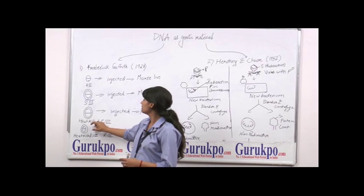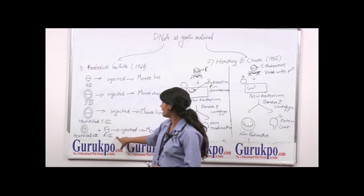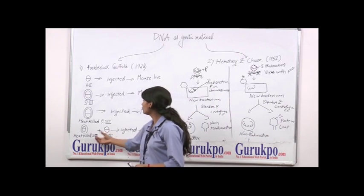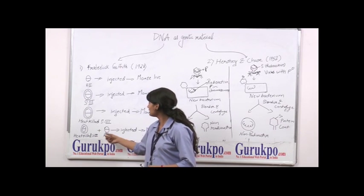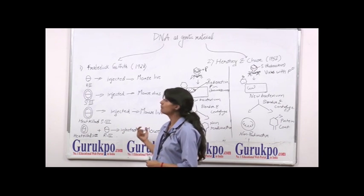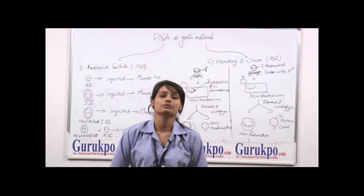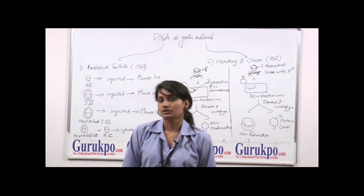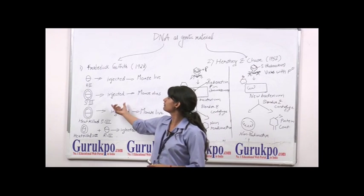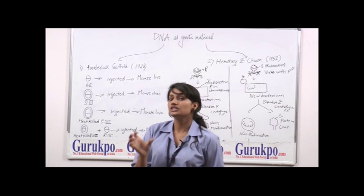In the next experiment, he took heat-killed S3 strain plus the R2 strain, and when injected into mice the mouse dies. What was the material that transformed the non-virulent strain into the virulent strain, which led to the death of the mouse? So in 1944, three scientists revisited the Griffith experiment and found that the transforming principle was actually the DNA, not protein.